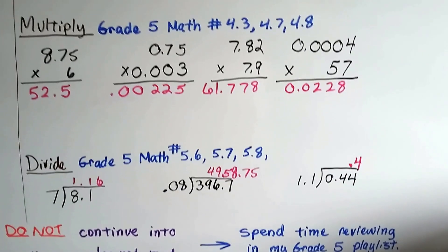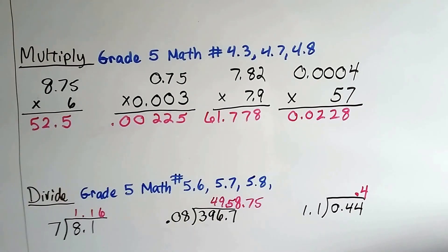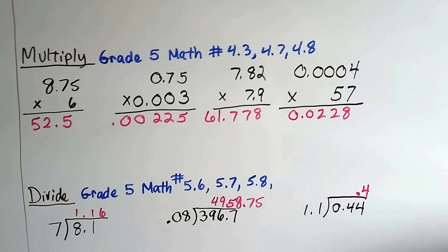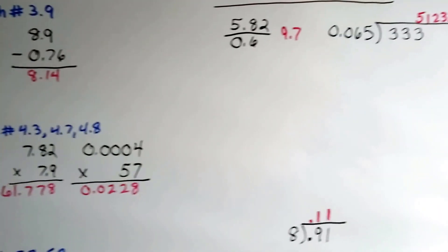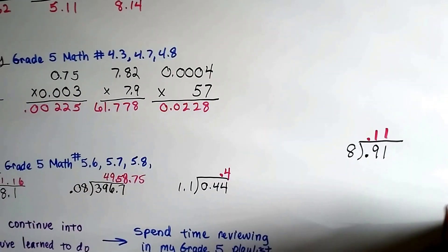You need to know how to divide decimals. And that's in Grade 5 Math 5.6, 5.7 and 5.8. All of these links are going to be in this description. So there's going to be quite a lot of links in this description. You need to know how to round to the nearest hundredth when you're dividing. And that will be in those videos.